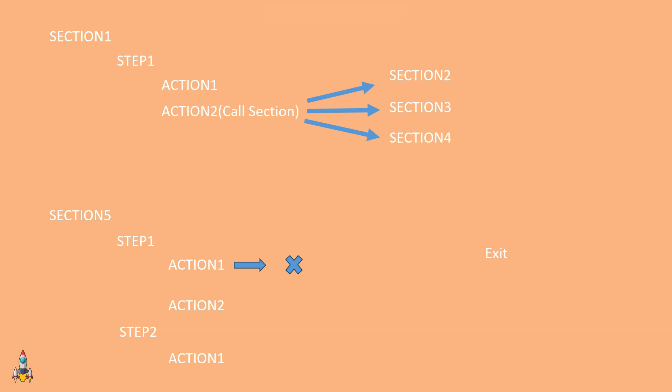That's the use of the exit statement — using it in PeopleCode application engine actions, you can stop execution of your current PeopleCode program. Now we have two types of exit statements available: exit 0 and exit 1. Both have the capability to stop execution of the current PeopleCode program. That's the similarity between them.